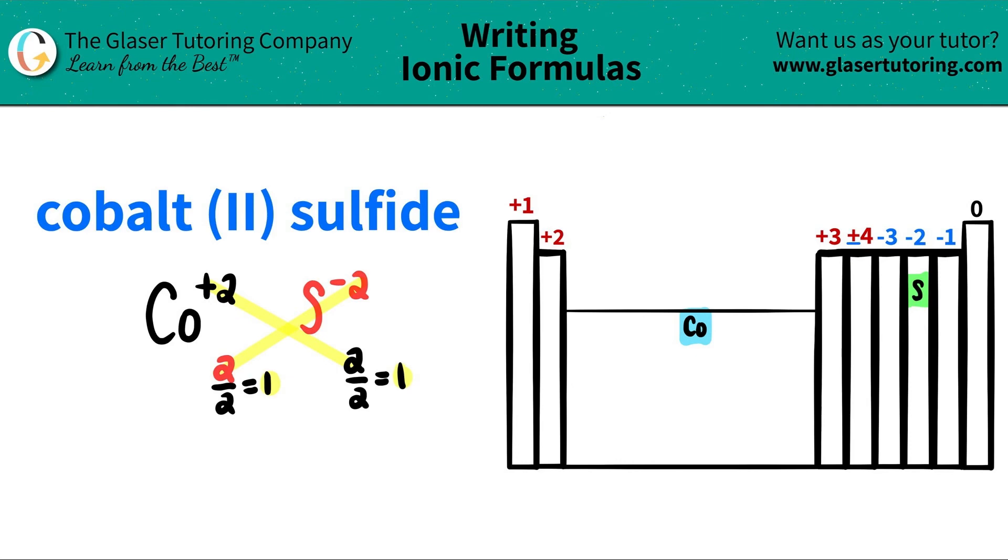So in this case, I have cobalt. I have only one cobalt, so I don't have to write the one. And then for the sulfur, I have one of them, so I don't have to write the one. And then I'm done. So cobalt (II) sulfide is just CoS.